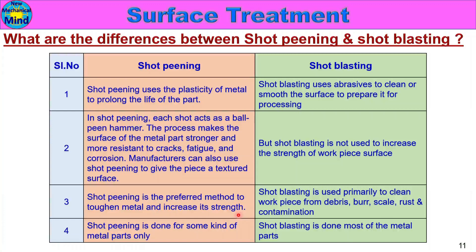When we look at the workpiece, shot peening makes the surface strong and increases its service life. Shot blasting is used primarily to clean the workpiece from debris, burrs, scale, rust, and contamination — these unwanted items are removed by the shot blasting operation. Shot peening is done for specific metal parts only, based on the application, while shot blasting is done for most metal parts. This is the difference between shot peening and shot blasting.